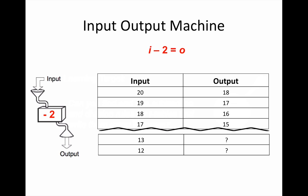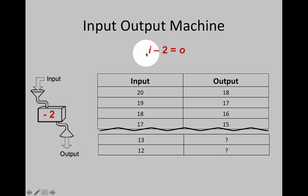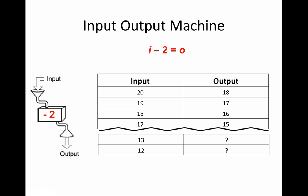Look at this input output machine. Any number that's put into the input machine has two taken away from it. You can see the mathematical expression up here: input take away two equals the output. Don't let the letters confuse you, they're just representing the numbers that are put in and out of the machine.